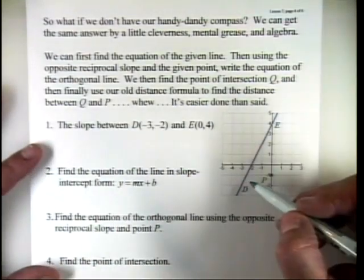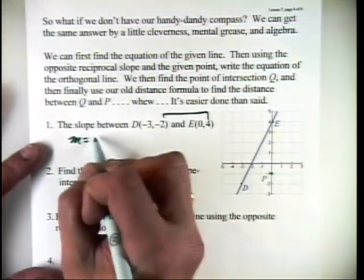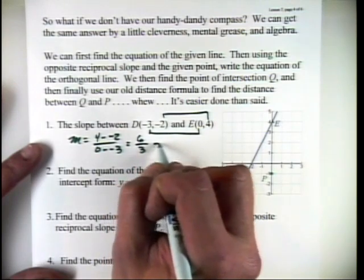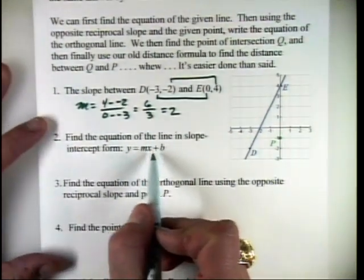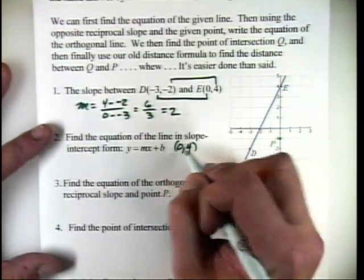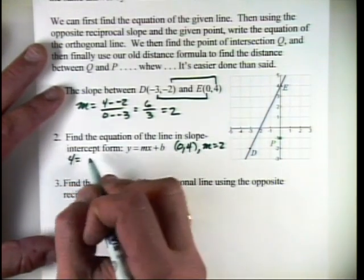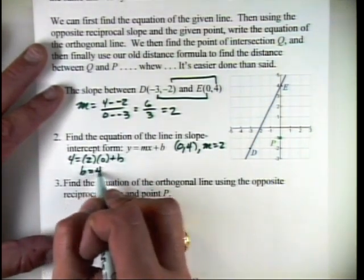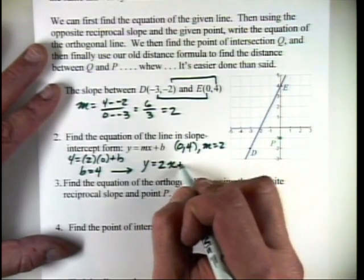The slope of line DE — we already figured it out, but let's do it by formula. Slope is the change in Y over change in X: 4 minus negative 2, over 0 minus negative 3, gives 6 over 3, which is 2. Using slope-intercept form Y equals MX plus B, I choose point 0, 4 and slope M equals 2. Plugging in: 4 equals 2 times 0 plus B, so B equals 4. The equation of line DE is Y equals 2X plus 4. You could have noticed the Y-intercept of 4 directly from the graph, but this method is more general.